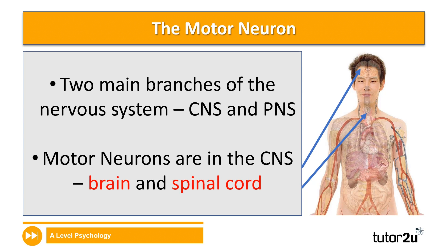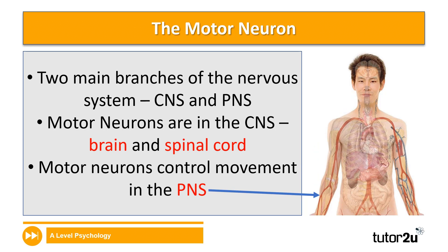The primary focus in this session is going to be the motor neuron. Hopefully you remember from the session on the nervous system that there are two main branches: the CNS, the central nervous system, and the PNS, the peripheral nervous system. Motor neurons are located in the CNS — the brain and the spinal cord — but they control the movement of muscles in the peripheral nervous system. When a motor neuron is stimulated, it releases neurotransmitters that bind to receptors on muscles, triggering a response that leads to movement.